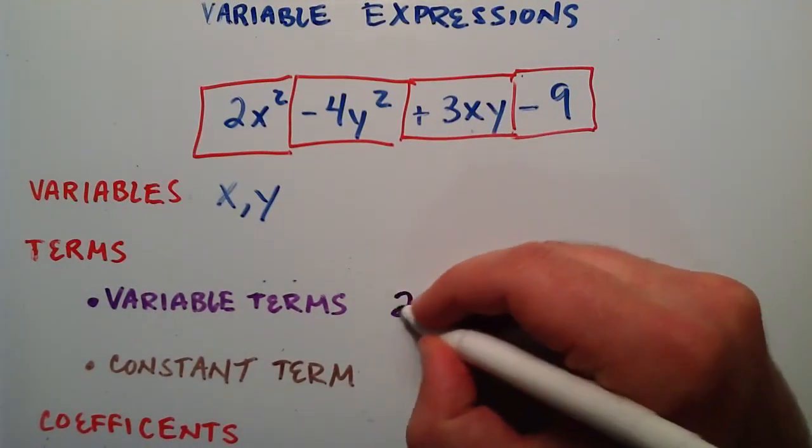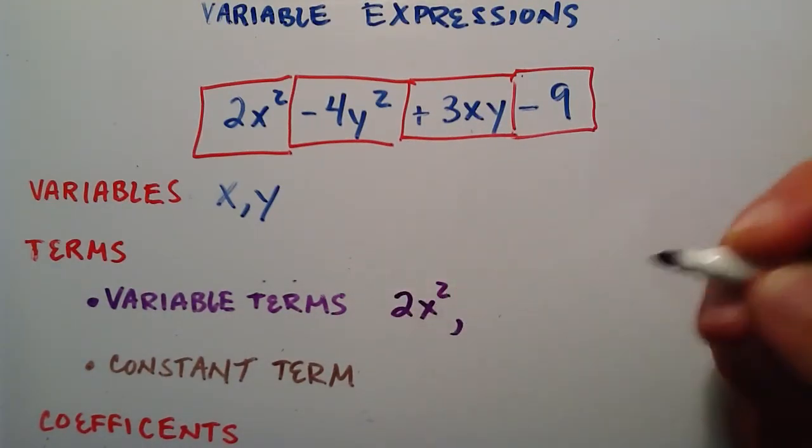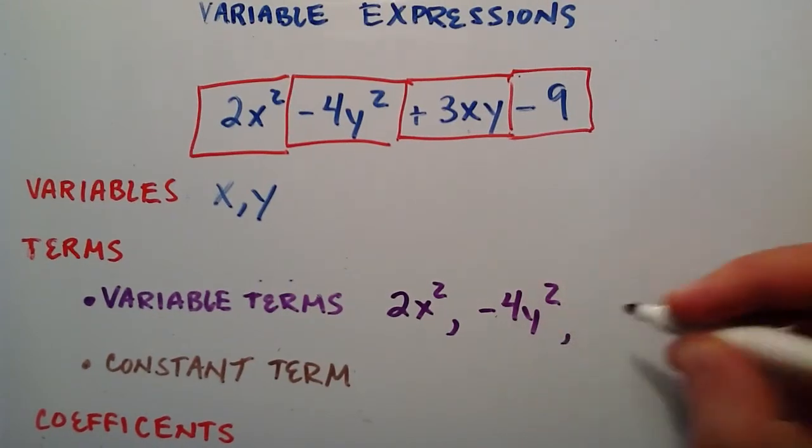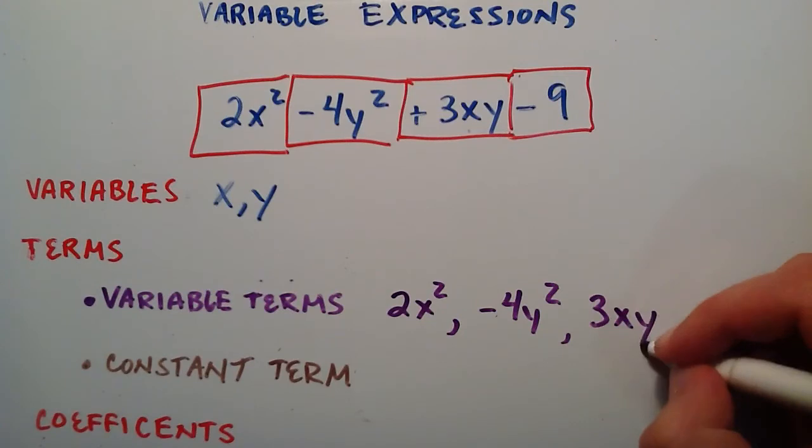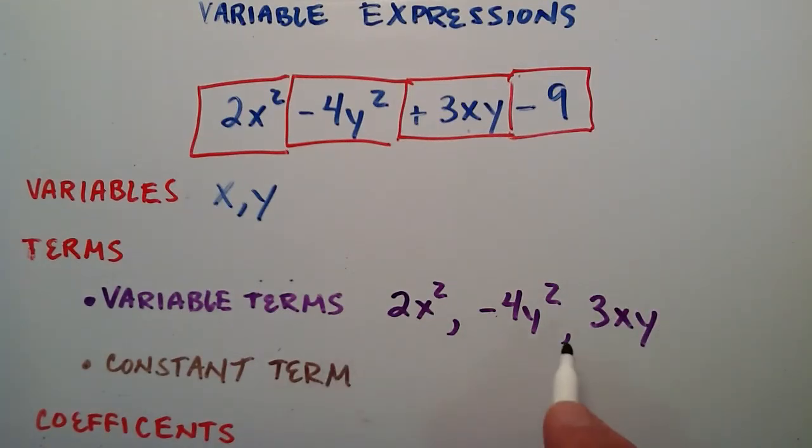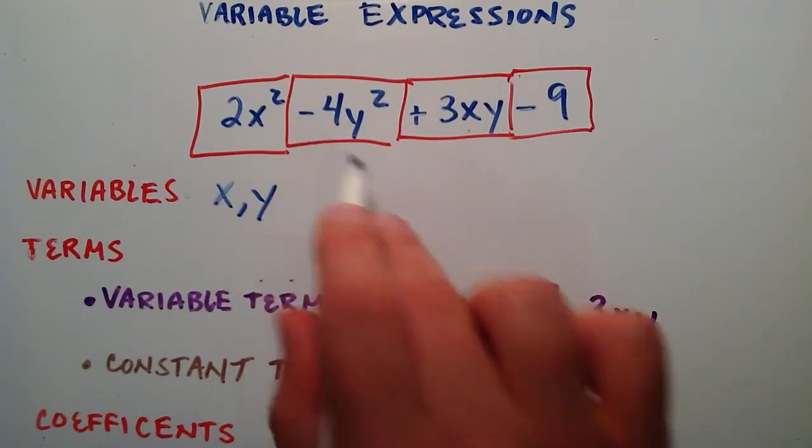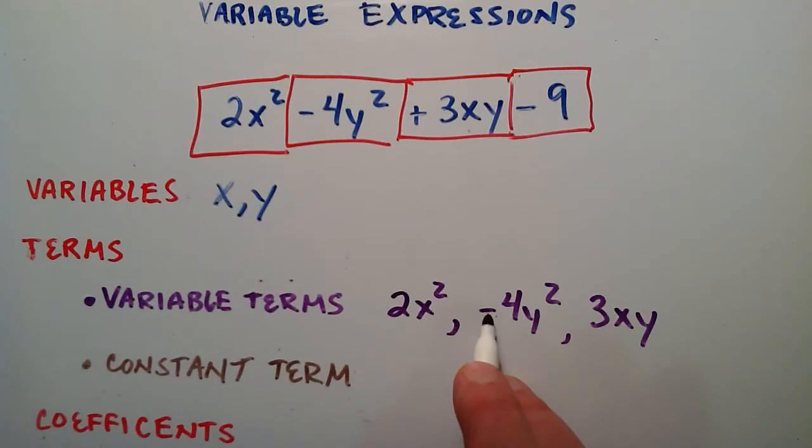For our example up above, 2x squared minus 4y squared and 3xy are all variable terms. It's important to put this negative sign also here. Notice how I included the negative sign in our term, that guy is part of our term.